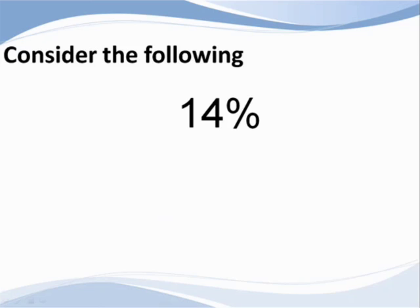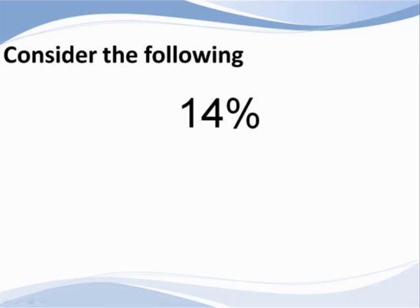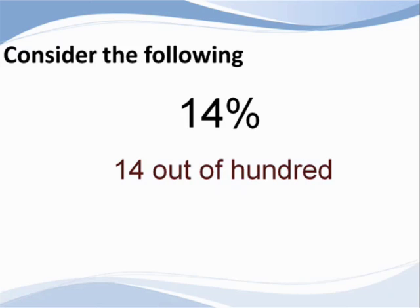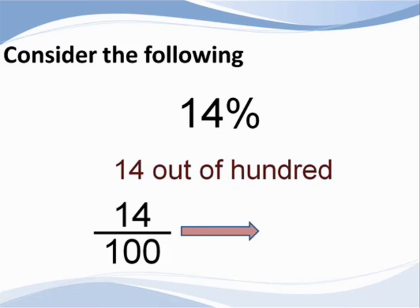Well, consider the following: fourteen percent. This means 14 out of 100, or 14 over 100. As we learned earlier, 14 over 100 is read 14 hundredths, which is written as .14. This percent has been changed to a decimal.